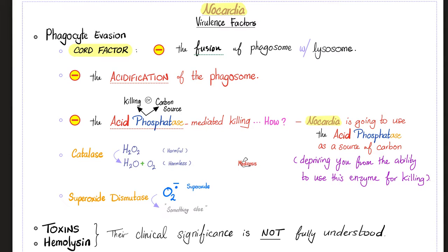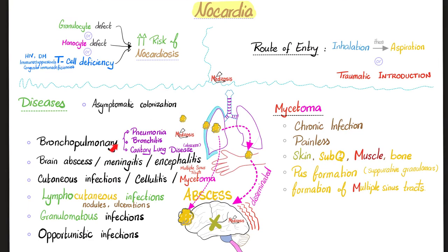The virulence factors of Nocardia include: the cord factor, which inhibits the fusion of phagosome with lysosome; inhibition of phagosome acidification, rendering it less effective; inhibition of acid phosphatase, so you are unable to use it to kill bacteria — in fact, Nocardia diverts that acid phosphatase as a carbon source; superoxide dismutase to convert your superoxide; and catalase to take hydrogen peroxide and break it down to harmless oxygen and water.